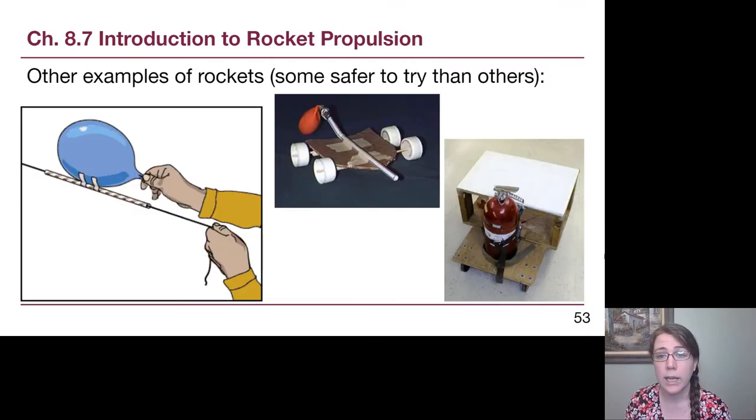So why stop with just big-scale rockets? We've got lots of examples that are kind of rocket propulsion ideas that are just coming down to this idea of momentum conservation starting from rest and having some stuff move in one direction and the rest move in the opposite direction. The first two pictures are ones that you can try at home. Please do not use any fire extinguishers for at-home experiments.